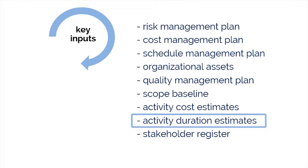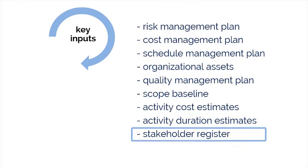Activity duration estimates — we have to estimate how long each activity will last so that we can project whether those estimates propose any risk. Stakeholder register — if we have information about the stakeholders, then we can leverage that information for identifying risks. Those are all of the possible inputs for the Identify Risks process.